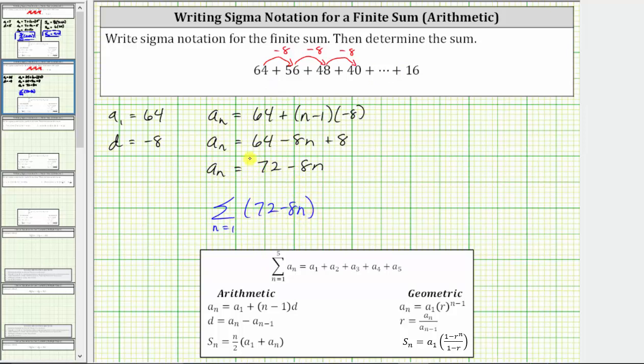The formula to generate the terms in the series is given by 72 minus 8n. And now we're left to determine the upper limit of the index, or the last value of n, which is the value of n that will generate the last term in the series, which is 16.